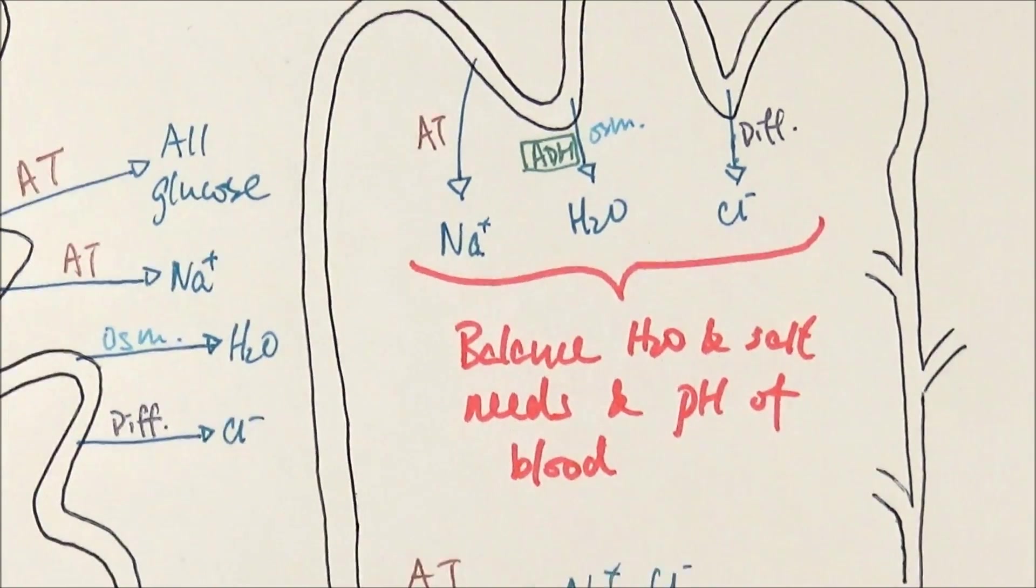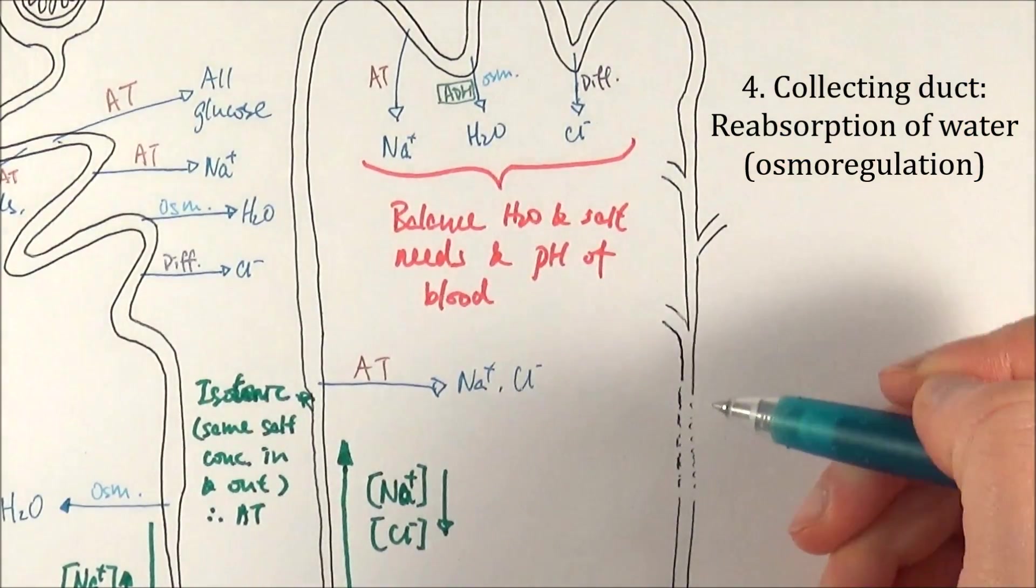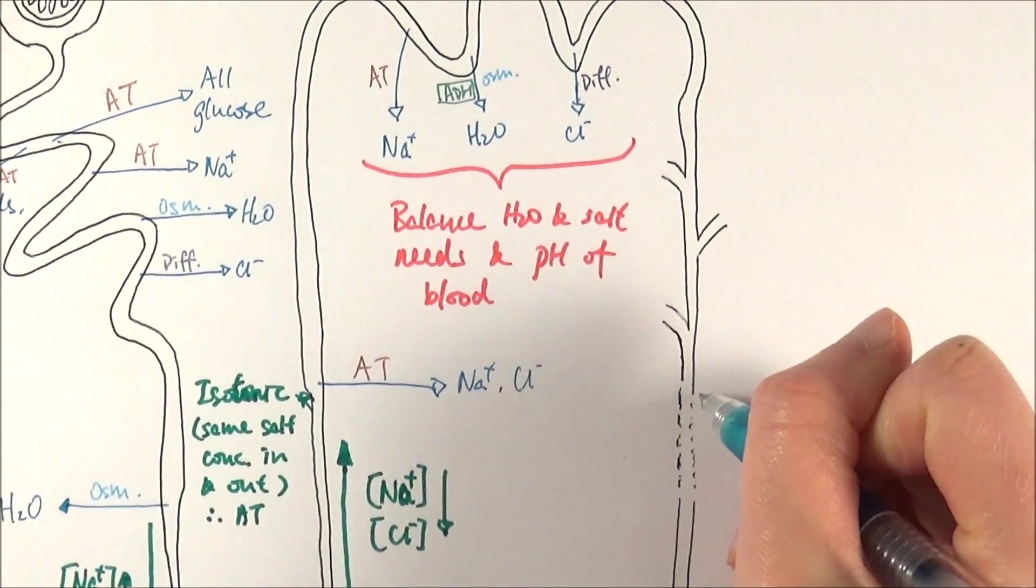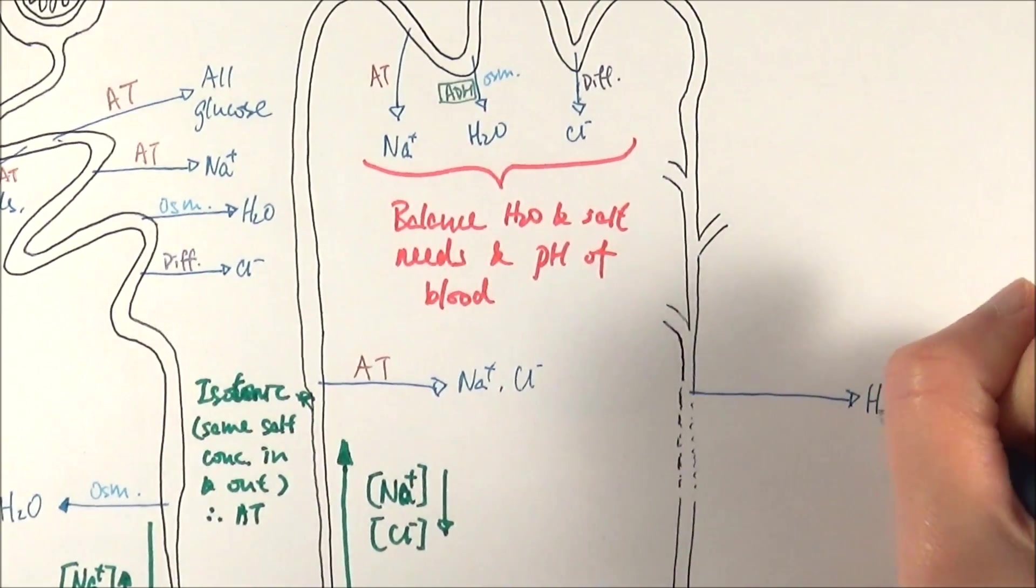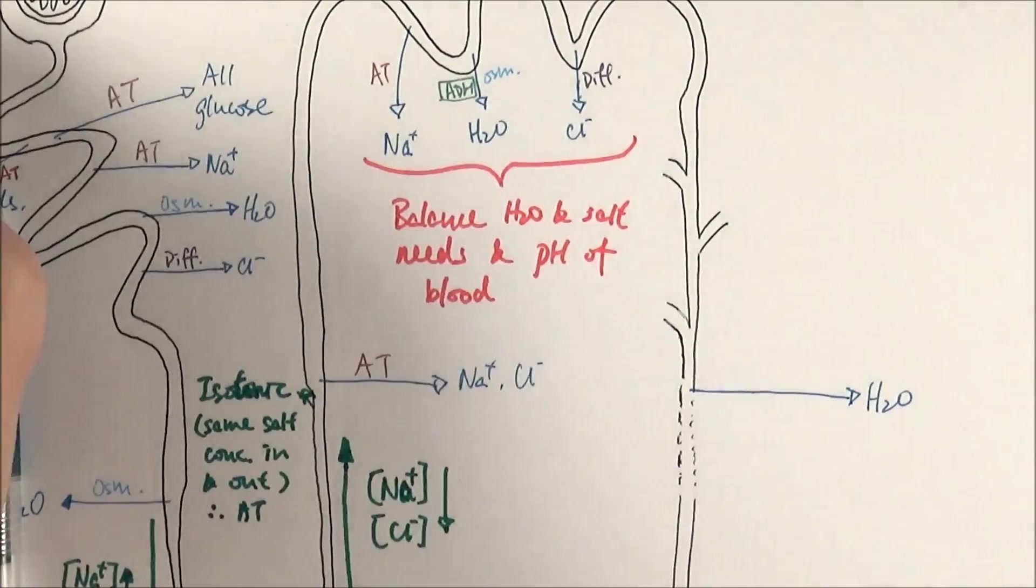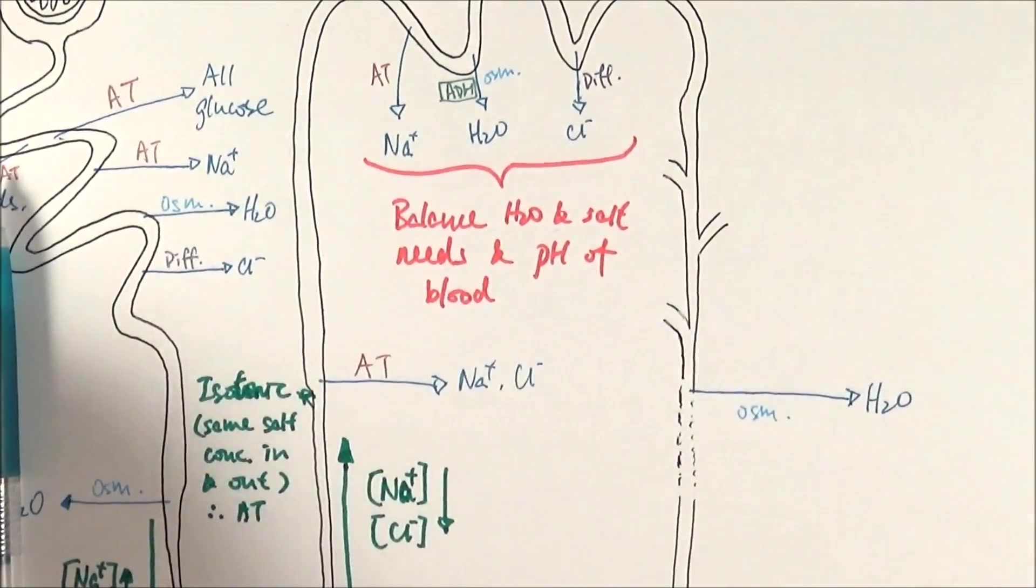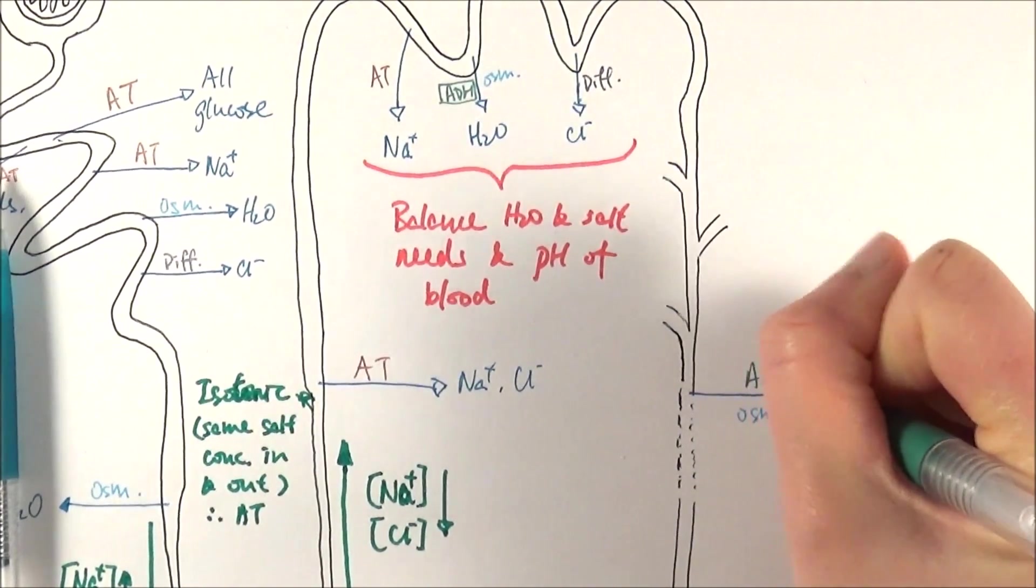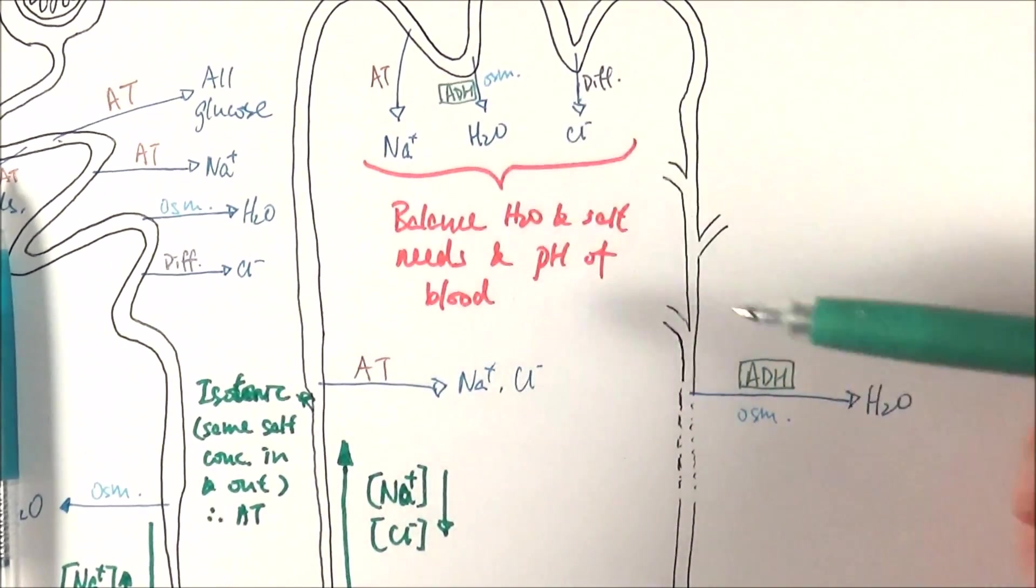Then finally, we reach the collecting duct in here. So we move down the collecting duct. In this bit, this is where osmoregulation really, really occurs. We'll talk more about osmoregulation in another video, but here I'll just very quickly illustrate it. So water can again be reabsorbed, and it's by the process of osmosis. But ADH, which is antidiuretic hormone, plays a major role here. It really only affects the collecting duct and sometimes the distal convoluted tubule.